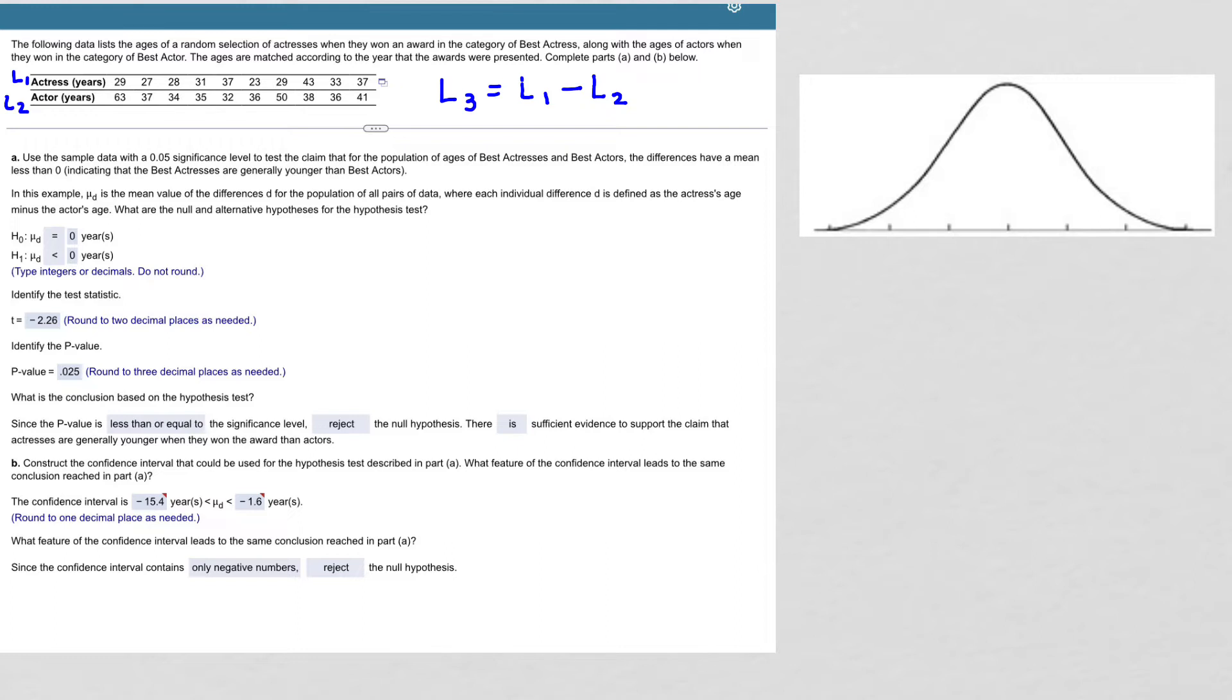So now I'm ready to find my confidence interval. I've already gone through the hypothesis test. To find a confidence interval based on the same level of confidence that we were working with in the hypothesis test, I look for the significance level, and that is 0.05.